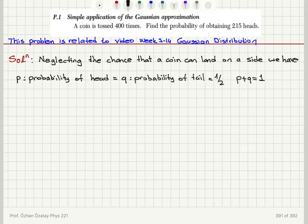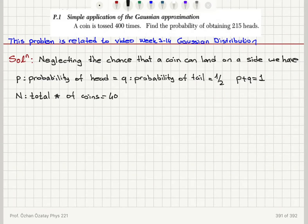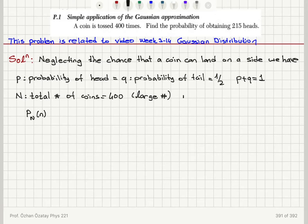So when we toss a coin we can get a head or tail with equal probability. The total number of coins, capital N, is 400. I note that this is a large number.